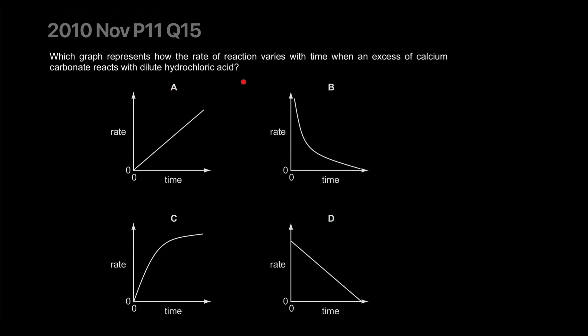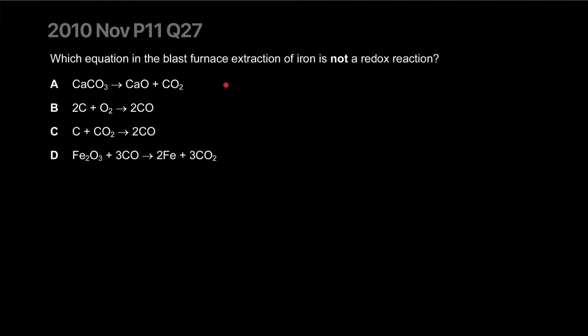Which graph represents how the rate of reaction varies with time when excess calcium carbonate reacts with dilute hydrochloric acid? The rate is going to go down over time, not constantly, because it's all dependent on the concentration. B is our best bet.